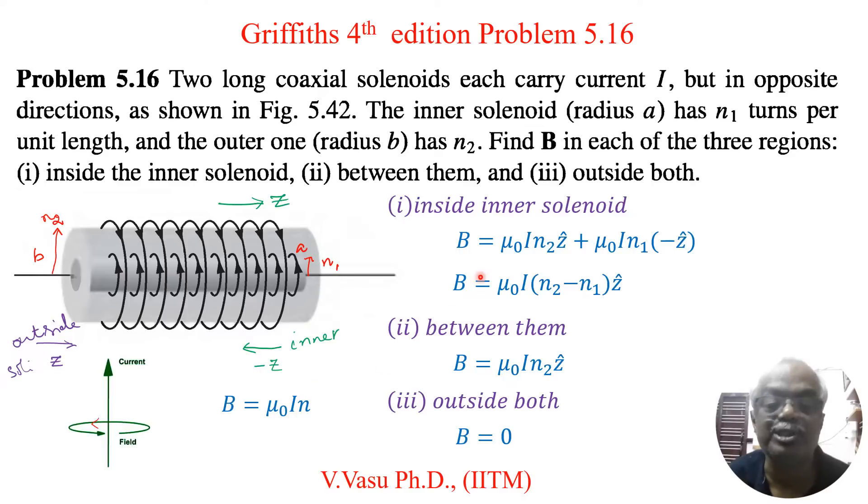So if you use this general formula you will get mu naught I n2. Because here number of turns is n2 for outer solenoid. Outer solenoid is positive Z direction. So I have included Z direction plus the inner solenoid.